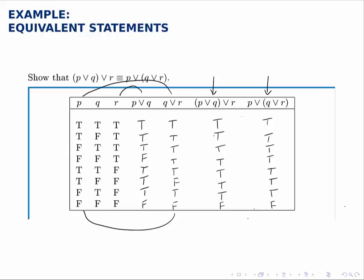Again, notice that these two columns are identical, so we've proven that those statements are equivalent, because that's what it means for two statements to be equivalent, that their truth table columns are identical.